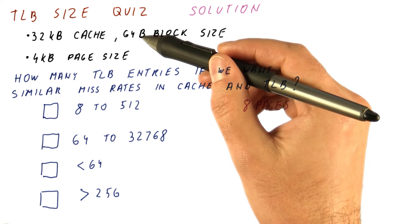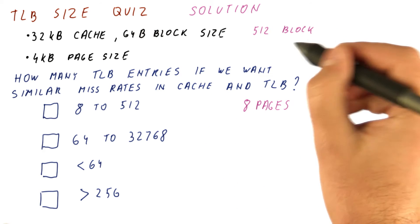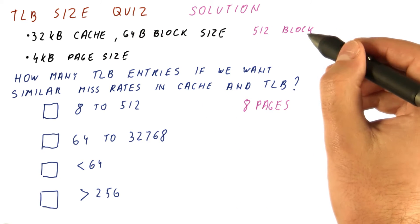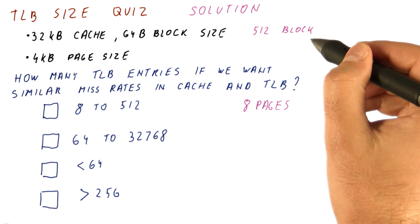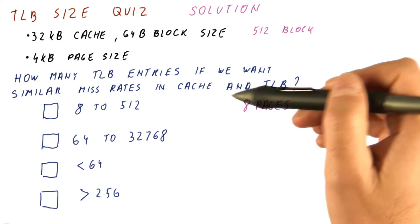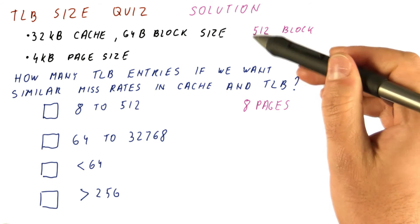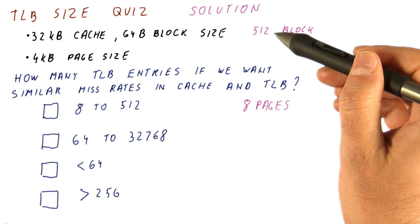Because in the cache, with a 64 byte block size, we can fit 512 different blocks and they can be spread around the whole memory. In contrast with eight entries in the TLB, we can only be accessing eight different pages, while these 500 blocks theoretically could be in 512 different pages.